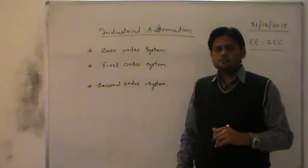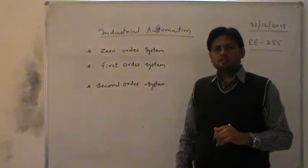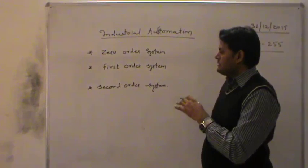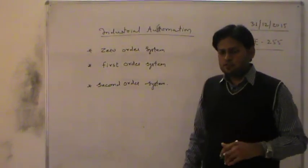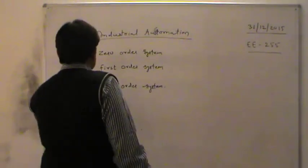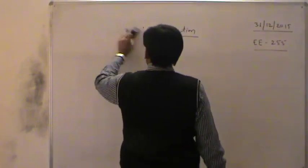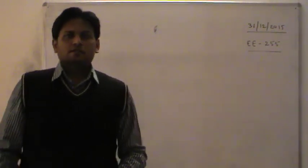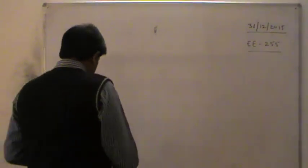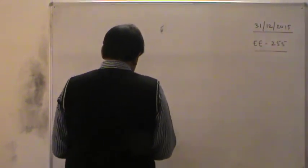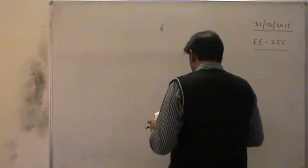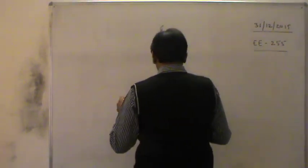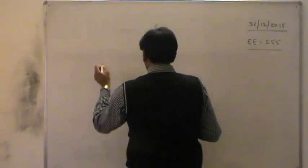Let us start with the mathematical equation of a generalized measurement system and then derive the equations for zero order, first order, and second order systems. Let us first go with the generalized mathematical equation for a measurement system. A general measurement system can be mathematically described by the following differential equation.